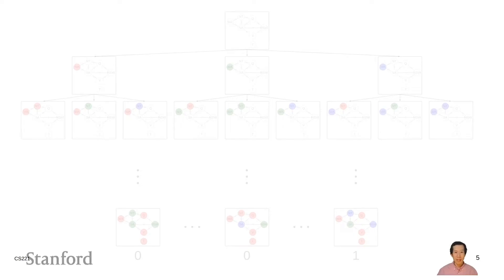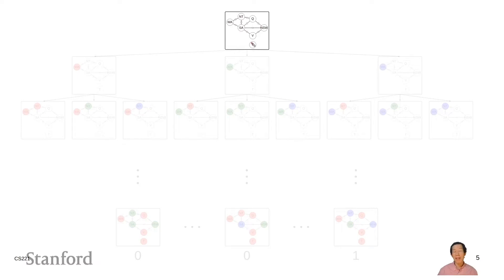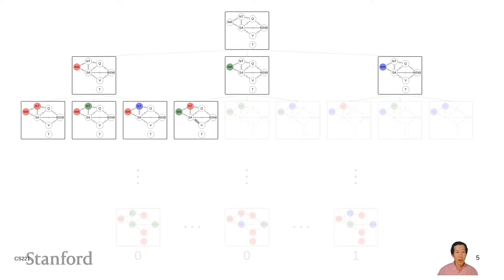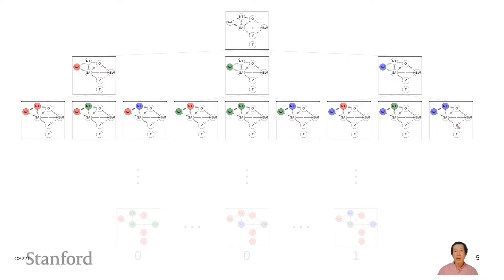Before talking about constraint satisfaction problems, I want to revisit how we might solve this as a state-based model, since that's the hammer we have. Let's cast this as a search problem. We start with an initial state representing no provinces assigned any color. From that state, we can take three possible actions: assign WA red, assign WA green, or assign WA blue. From each of those, we can assign NT red, green, or blue, and so on — producing a search tree like the ones we've studied before.